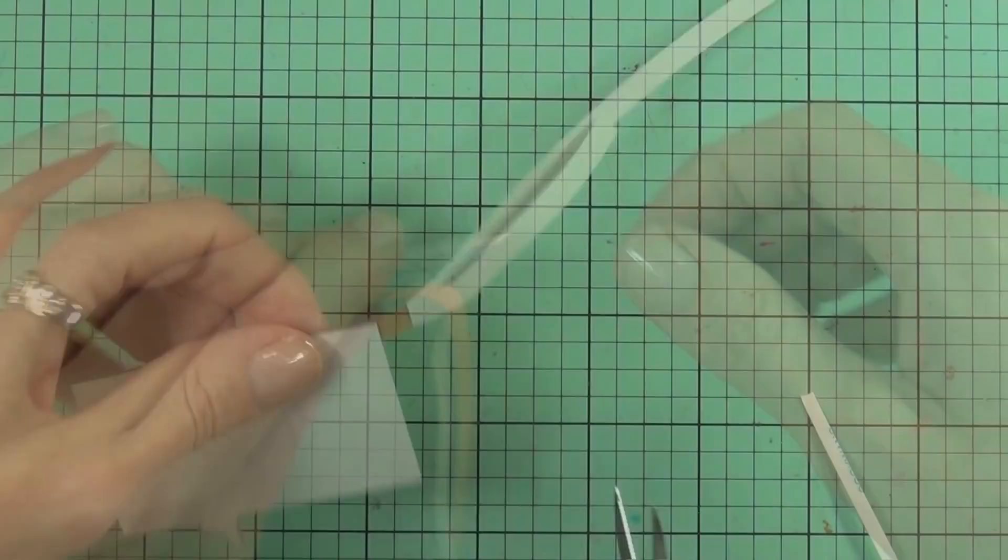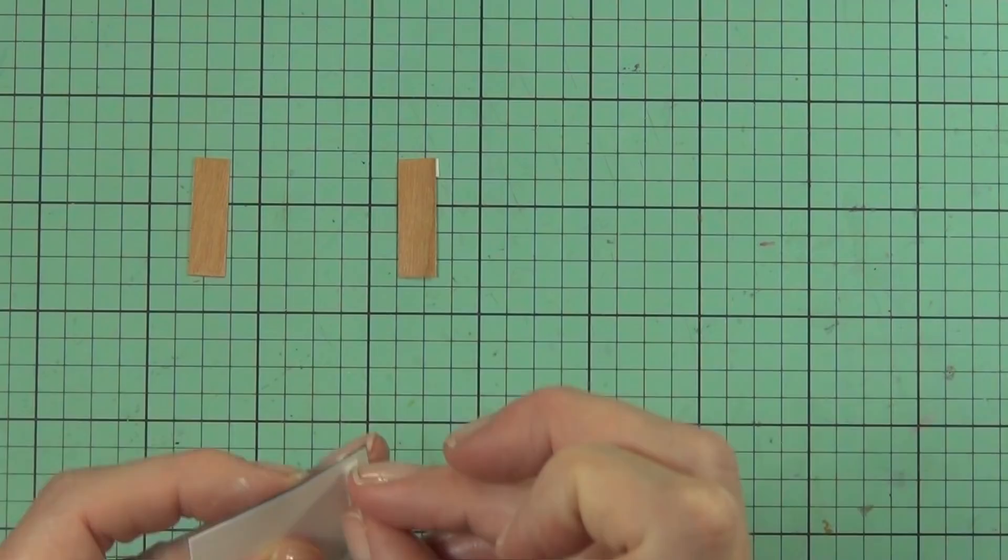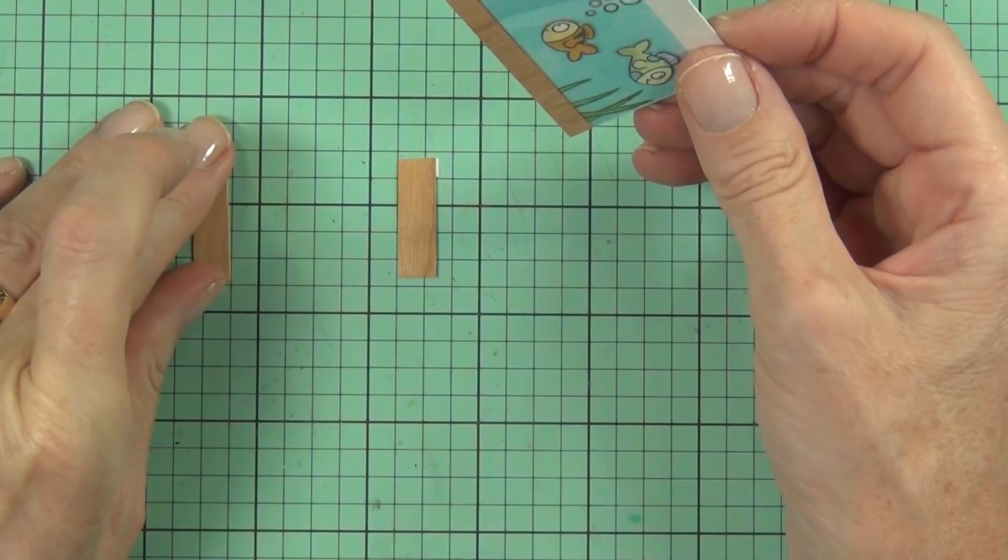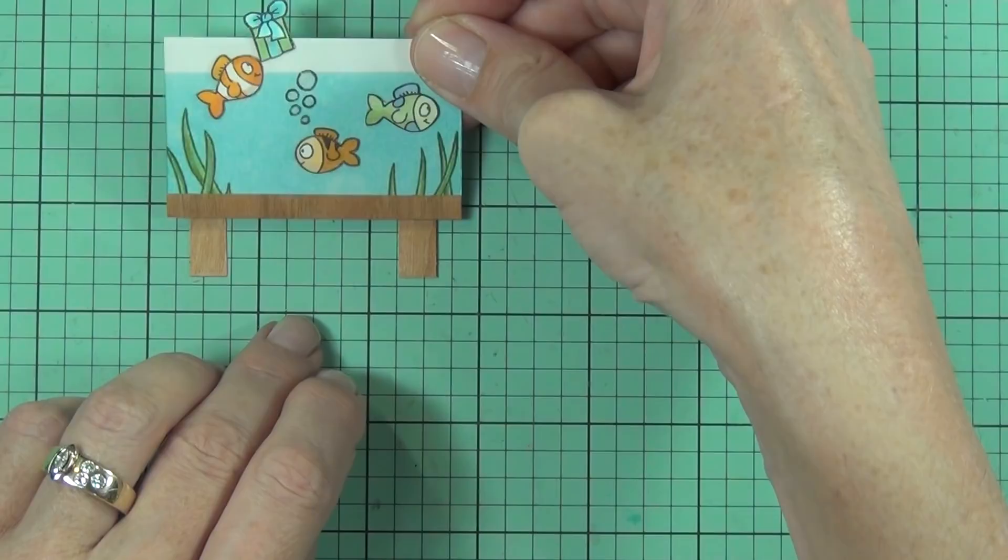I'm just going to adhere with some Be Creative tape as well because there's a nice strong tape. You could use a liquid glue here that would hold it really well—you just don't want to squish it out onto the acetate because you'll be able to see it. And dry tape is much quicker.